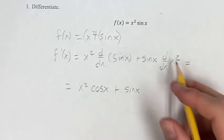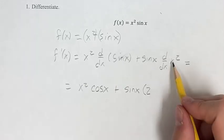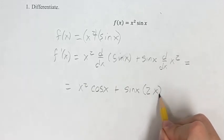x squared is a power function, so you bring the numerator down, so this is times two, and then you subtract one from your exponent, so this is x to the first power, which is just x.